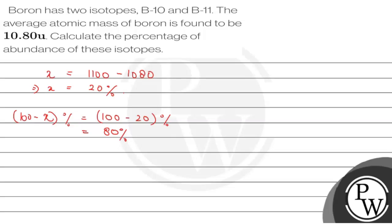So x was the abundance of B-10 isotope, and (100 - x) was the abundance of B-11 isotope. So x is equal to 20 percent. Percentage abundance of B-11 isotope is 80 percent, which equals to 100 percent total abundance.